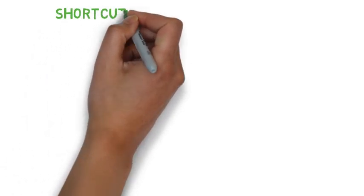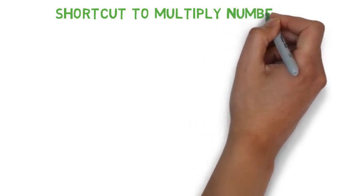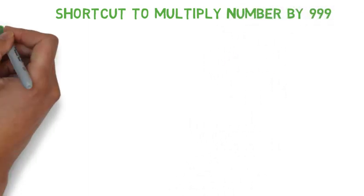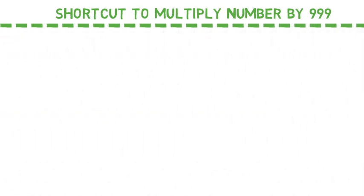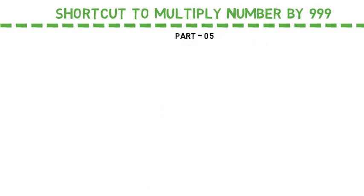Hello friends, welcome to the shortcut world. In this video I am going to teach you how to multiply any number by triple nine, means 999. This is the fifth part of shortcut multiplication.